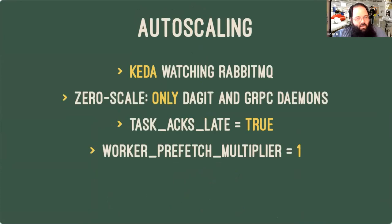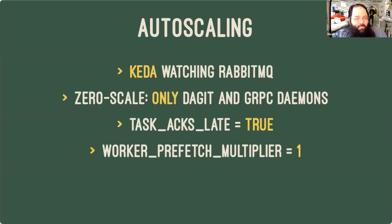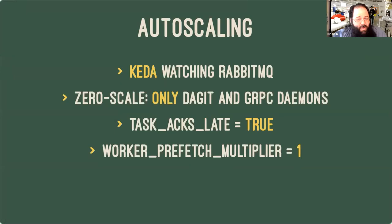One of our big goals was being able to scale our system down when not in use. Dagster delivers that nicely — the minimum system state is just Dagit and one copy of the gRPC daemon for each workspace running, using very few resources: almost no CPU and just a little bit of RAM. Because everything is decoupled via RabbitMQ, we use a tool called KIDA to watch the queue depth in RabbitMQ and drive our autoscaling. Two important things on the Celery side if you're going to try something like this: messages need to stay in the queue while being processed so KIDA can see them, using 'task_acks_late', and either reducing or disabling prefetching so stuff stays in the queue until it's actually been processed completely.